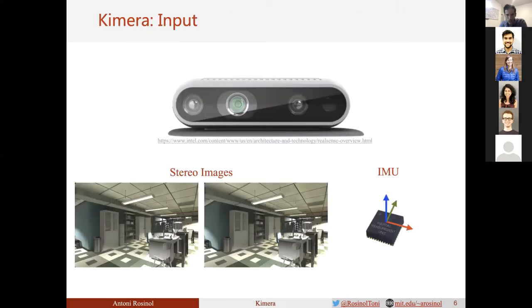Let's start with the inputs to Kimera. Kimera receives stereo images from a stereo camera, as well as inertial information from an inertial measurement unit, or IMU—both provided, for example, by the Intel RealSense sensor shown here.